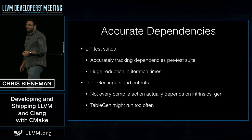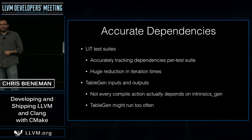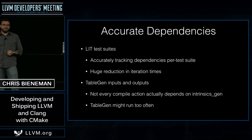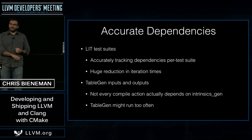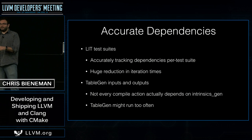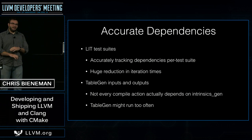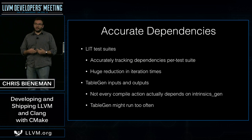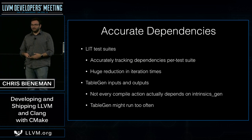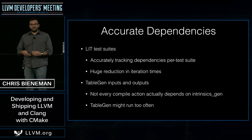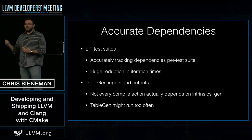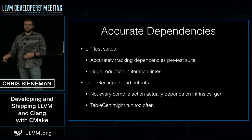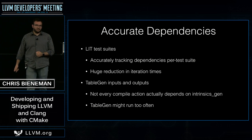We're also really bad about how we model the dependencies of TableGen. We have a hack in the build system where after you run TableGen, you compare it against the last output and only copy it over if it's actually changed. It's a crazy hack but it saves a lot of time. It would be nice if we had accurate dependencies feeding into and coming out of TableGen builds, because then we could do a better job of culling the build tree when TableGen needs to regenerate.